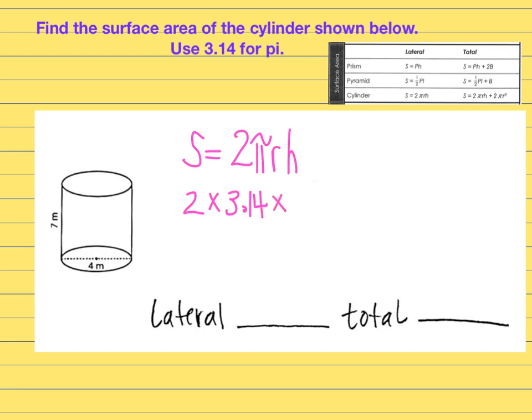Then the radius of this circle, remember radius only goes halfway across, so if I go halfway and stop that's only 2. And then the height of the figure is on the side and that is the 7. The 7 right here is the height.